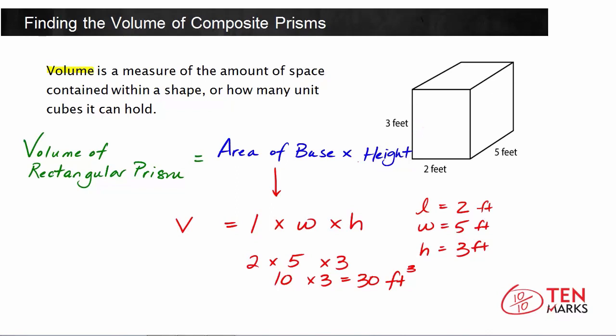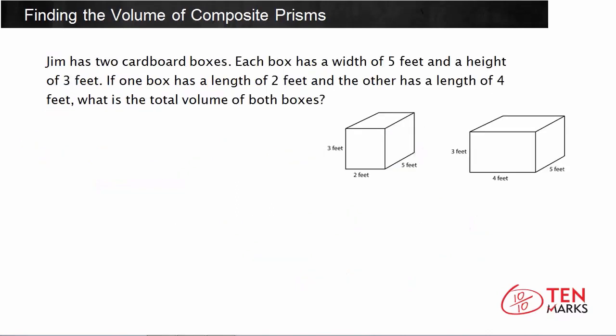Let's try another problem together. Jim has two cardboard boxes. Each box has a width of 5 feet and a height of 3 feet. If one box has a length of 2 feet and the other has a length of 4 feet, what is the total volume of both boxes?